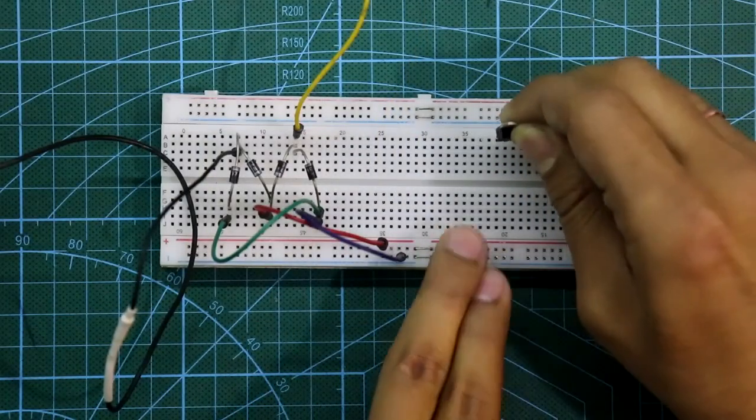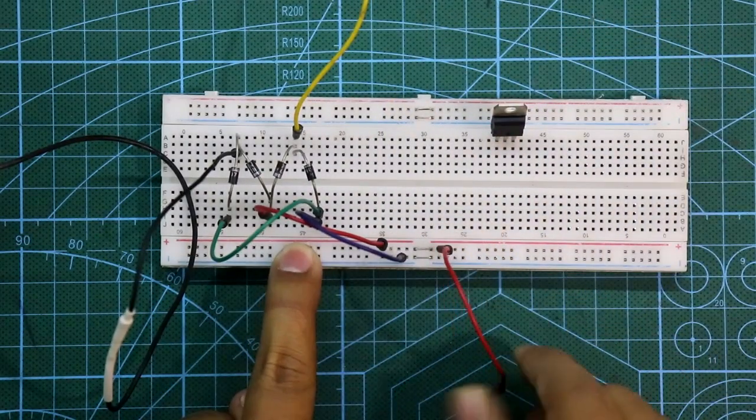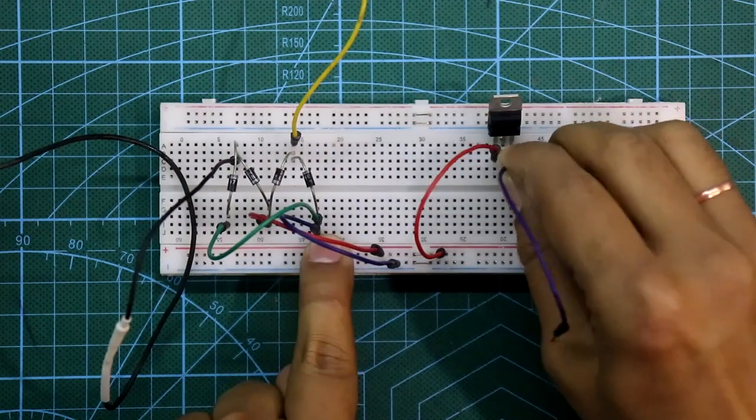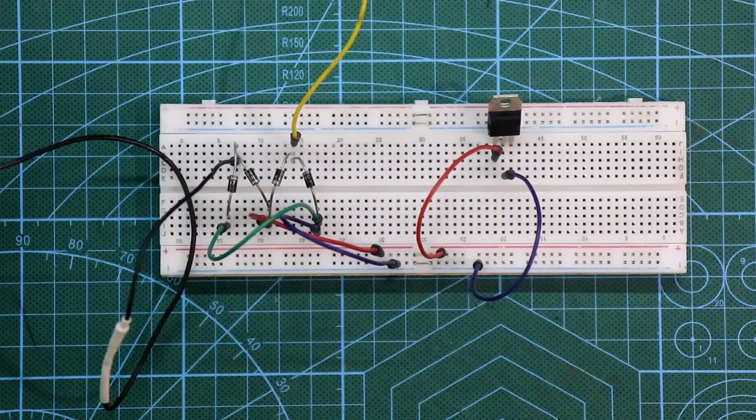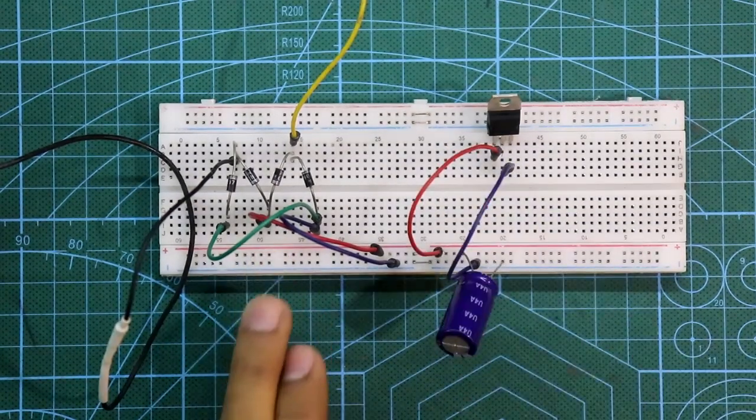Now put the IC 7805. Pin number one should be connected to the positive rail, the middle pin is connected to the negative, and from pin number three we'll take the output. We have to put 1000 microfarad capacitor across the input voltage.